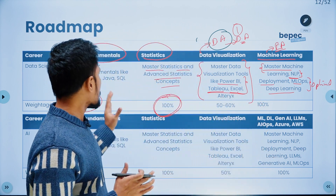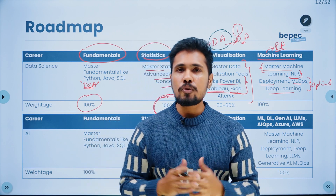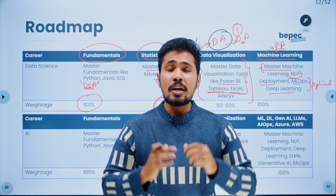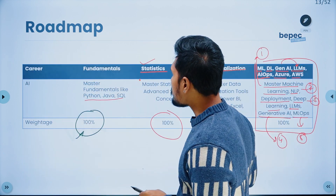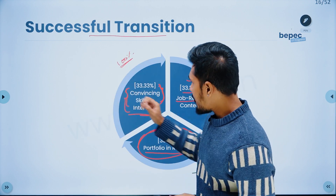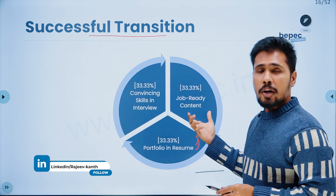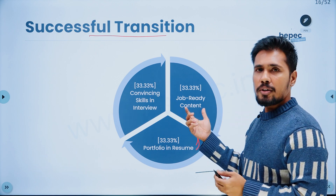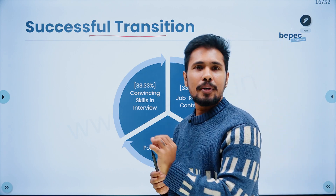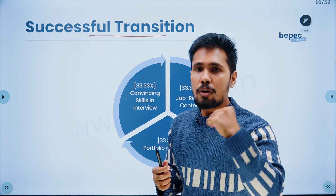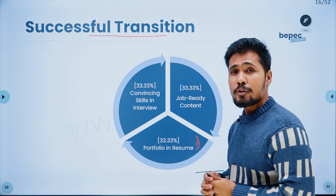The major weight is: first fundamentals, then statistics, then reporting, and then machine learning — that is the best approach to get into data science. Once you complete your data science learning, there are three pillars for any career transition. Whenever you are making a successful career transition, it is dependent on these three pillars. The very first one is job-ready content — the content I showcased earlier. The difference between regular content and job-ready content is that with job-ready content, you know why to use it and when to use it, with proper depth. This creates a weightage of 33%.